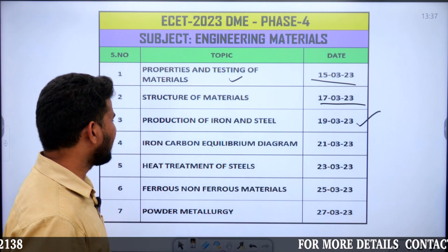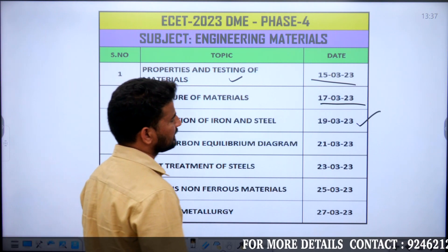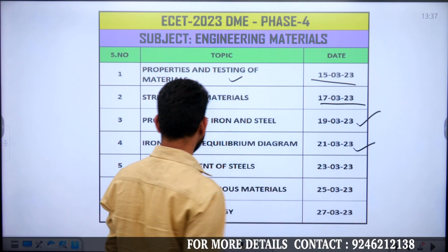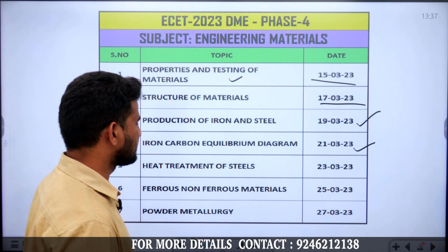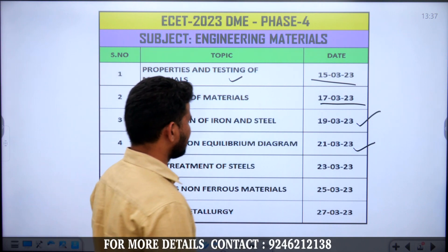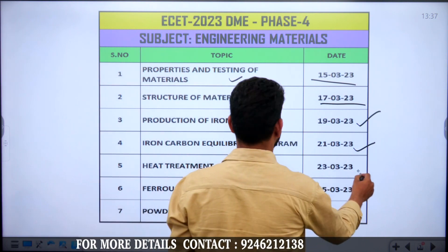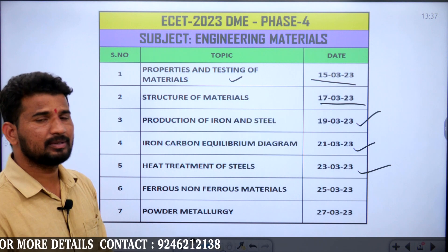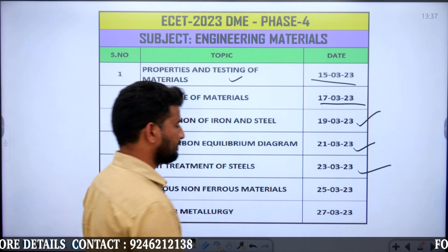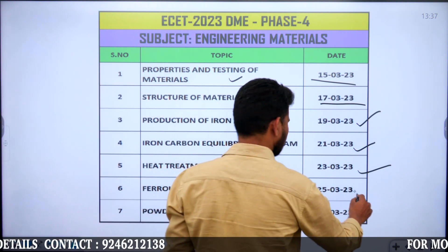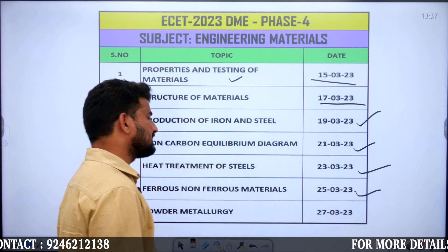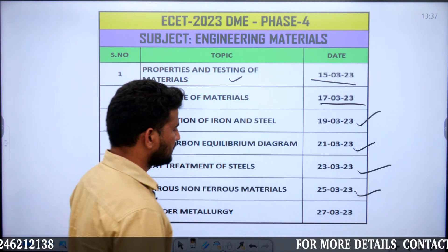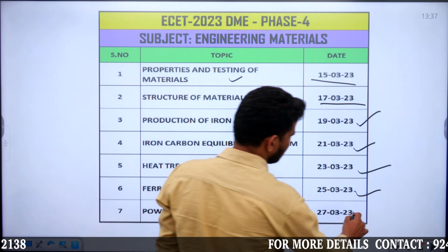The next topic will be the iron-carbon equilibrium diagram, which will be conducted on the 21st of this month. Heat treatment of steels will be conducted on the 23rd of this month. Ferrous and non-ferrous materials will be conducted on the 25th of this month, and powder metallurgy will be conducted on the 27th of this month.